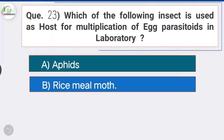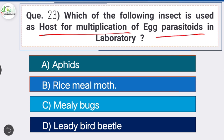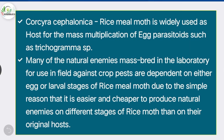Question 23: Which insect is used as host for multiplication of egg parasitoids in the laboratory? Option B is the correct answer: rice meal moth. Corcyra cephalonica, commonly called rice meal moth or rice moth, is a pest of stored foods. It is widely used as a host for the mass multiplication of egg parasitoids such as Trichogramma species, as it is easier and cheaper to produce natural enemies on rice moth than on the original host.